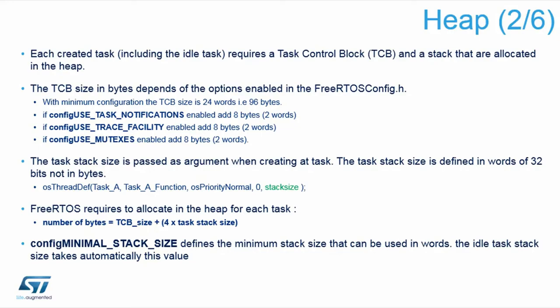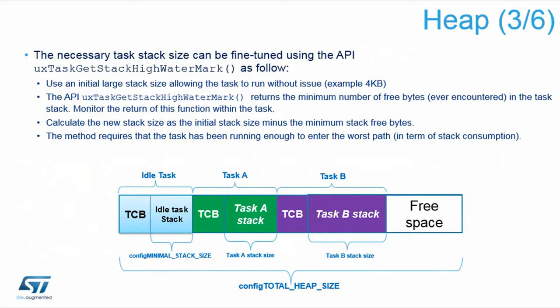Each task, queue, or other resource needs to have its control block and it is allocated in the heap. You can enable task notifications, trace facility, and mutexes in the heap — usually predefined in CubeMX. The control block size depends on the options you enable in the configuration file. When creating a task you need to pass the stack size dedicated for that task as an argument. For each task there is allocated the control block size plus four times the task stack size — the number is given in words and you need to define the minimum stack size, which is taken by the idle task.